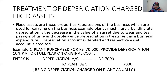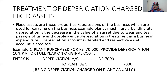Example: plant purchased Rs. 70,000; depreciation provided at 10% per annum on original cost. 10% of Rs. 70,000 is Rs. 7,000. Journal entry: depreciation account Dr. Rs. 7,000, to plant account Rs. 7,000. Narration: being depreciation charged on plant annually. Depreciation is always charged annually at a certain percentage on the particular asset, because of wear and tear, passage of time, and obsolescence.